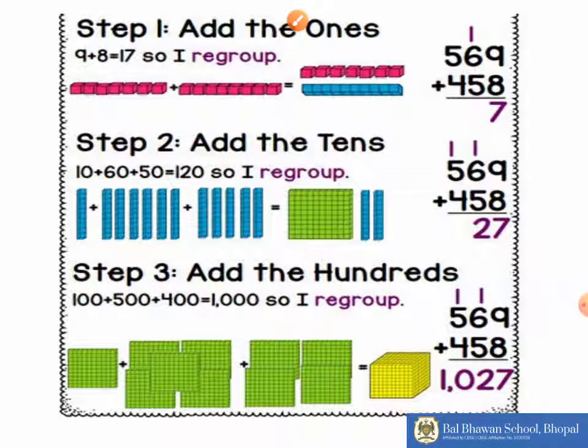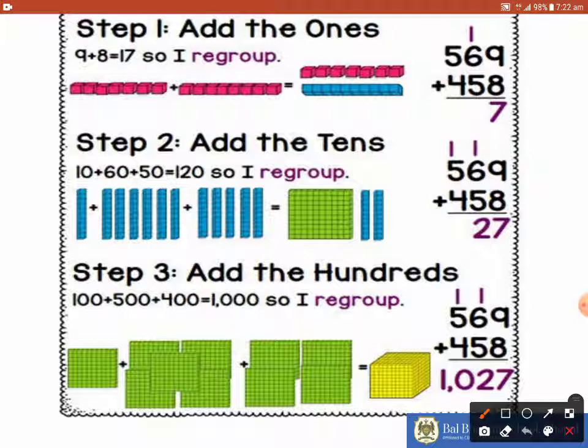So there are certain steps that we need to follow for adding the numbers. The first step is you have to regroup the numbers. For example, 569 is added to 458. Starting from one's place, we have to add 9 and 8. 9 plus 8 gives you 17 where 7 will be written at the bottom and 1 on the top.